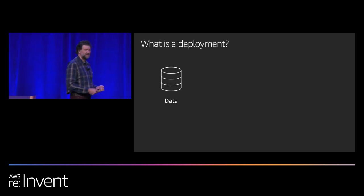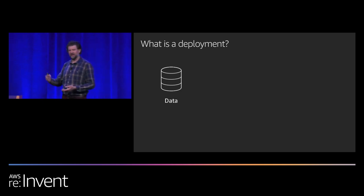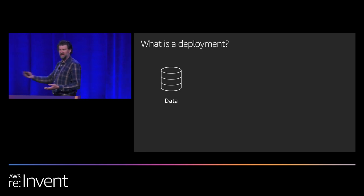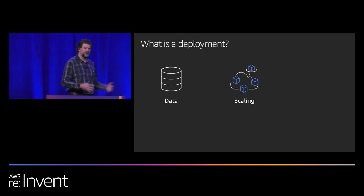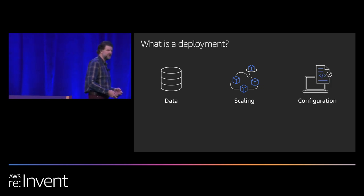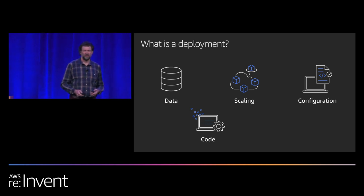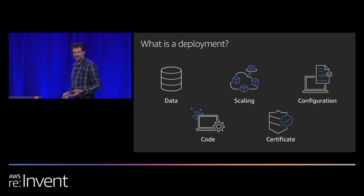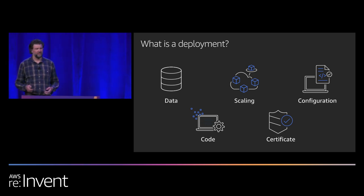A data migration is a deployment. Doing a database backfill, adding an index to the column of a database table, or doing a database failover are all examples of deployments. Scaling your fleet up or scaling your fleet down, doing a configuration change to your service, doing a code release — the more traditional definition of a deployment — or rotating your certificates. These are all examples of things that we consider to be deployments.